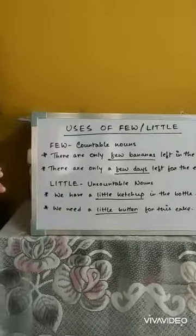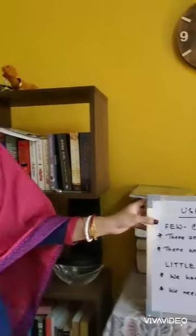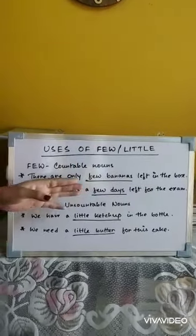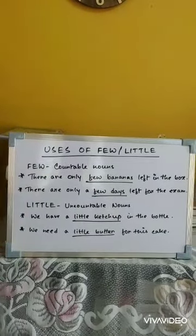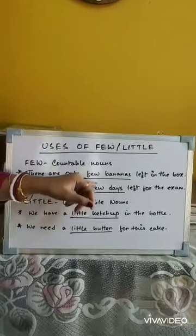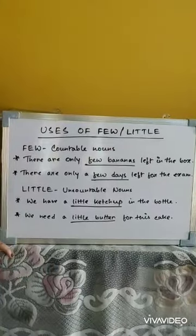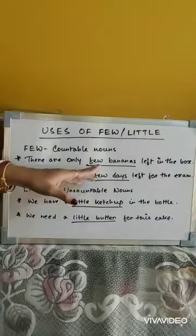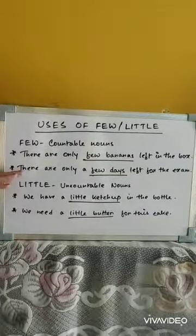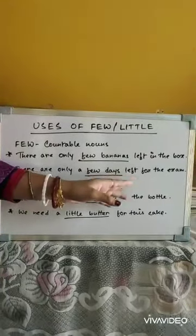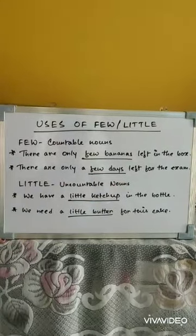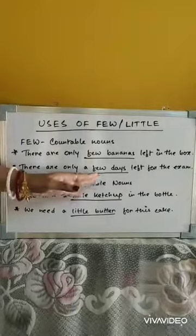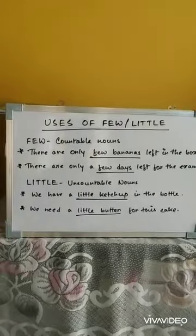Now we will learn the use of few and little. Few is used with countable nouns — things we can count. For example: there are only a few bananas left in the box. We can count bananas, so we use few. Another example: there are only a few days left for the exam. We can count days, so we use few before it.